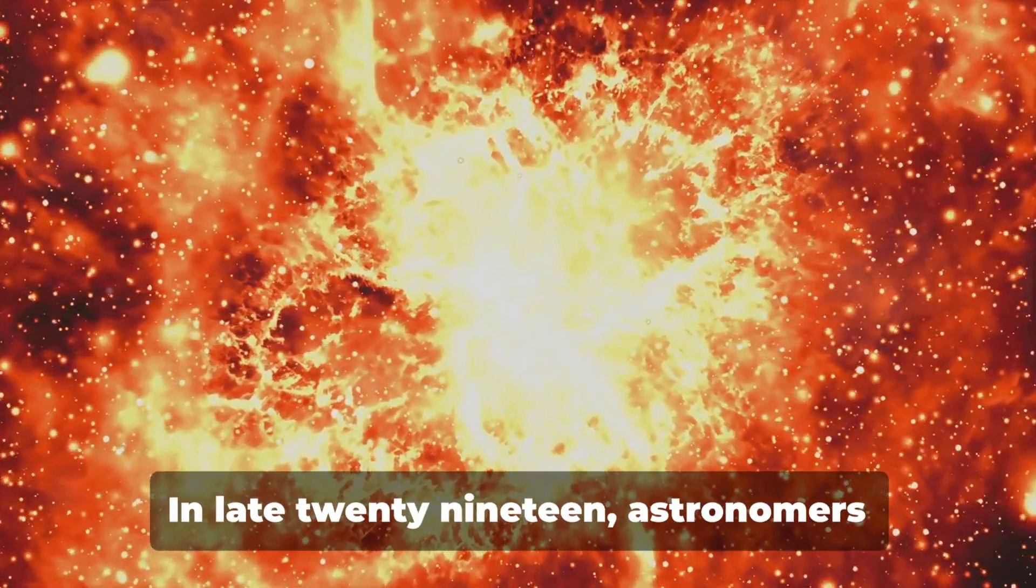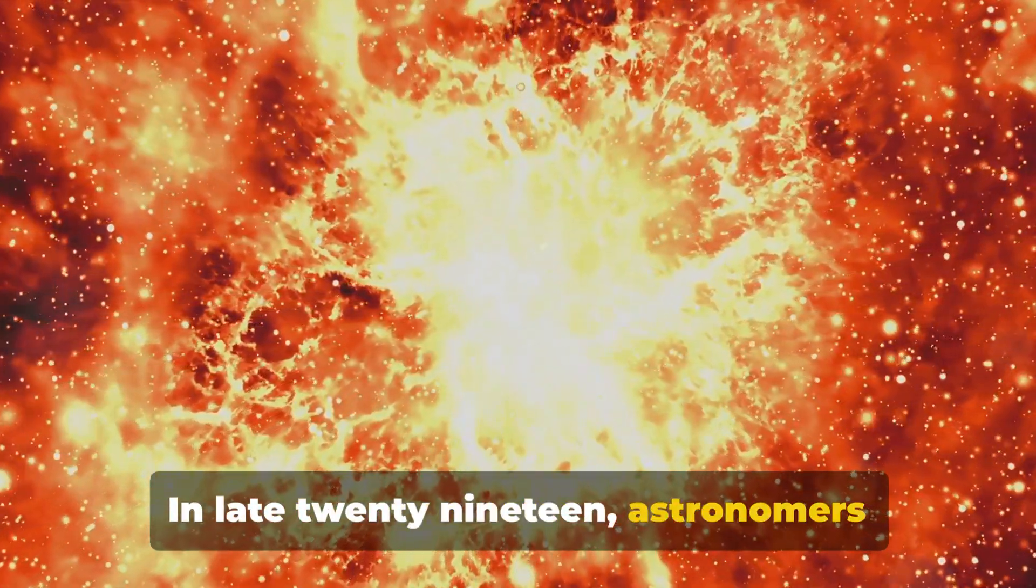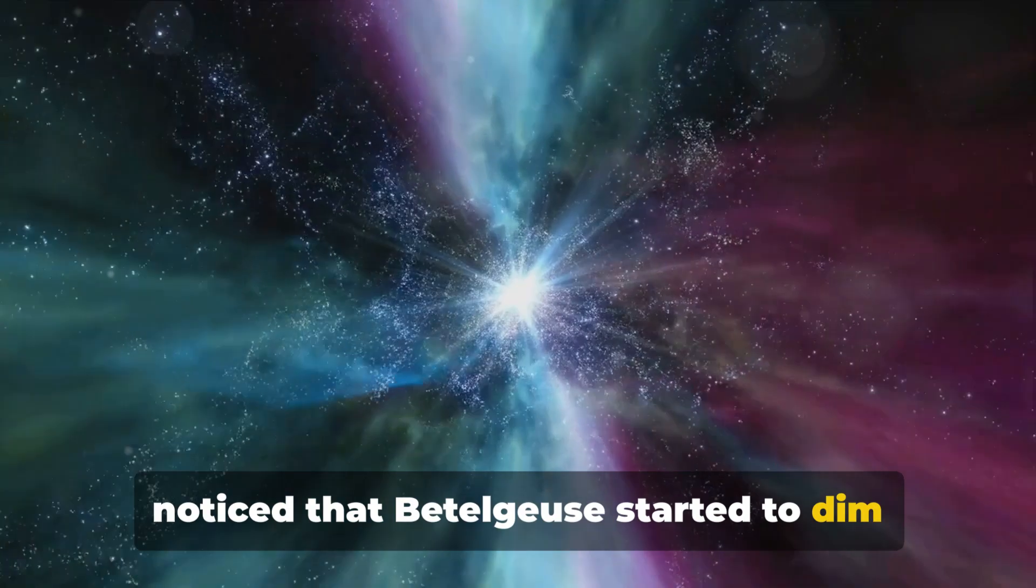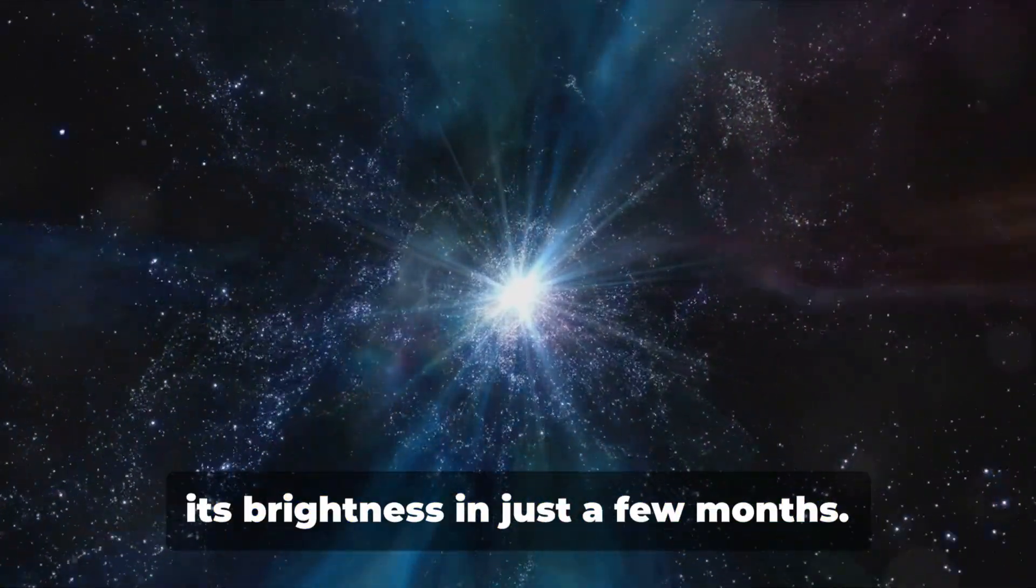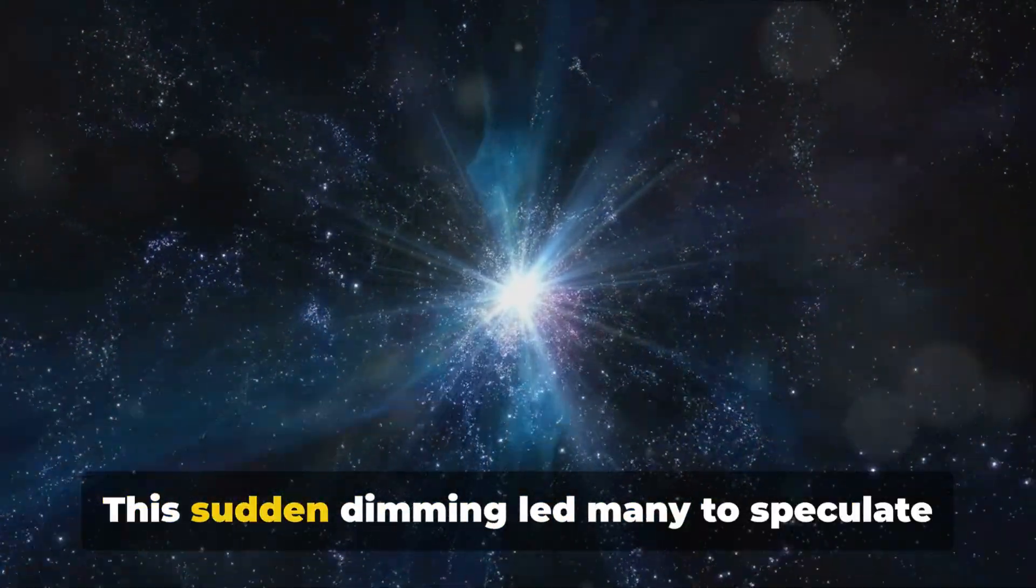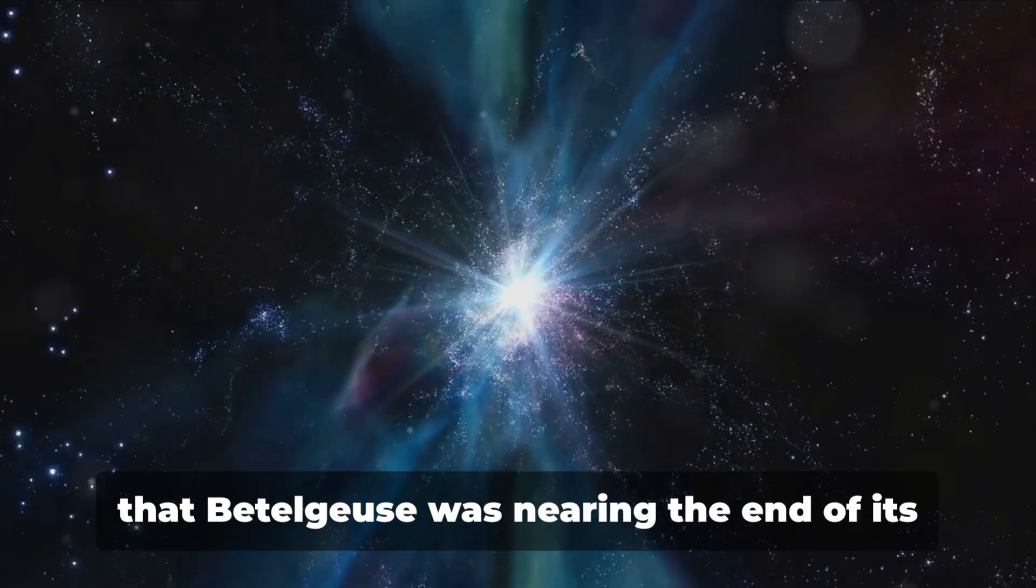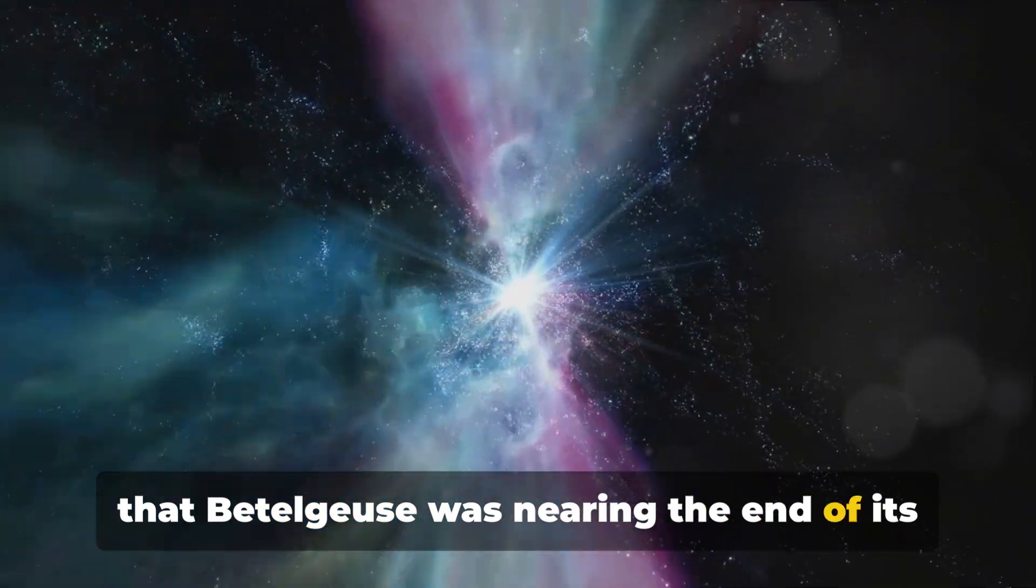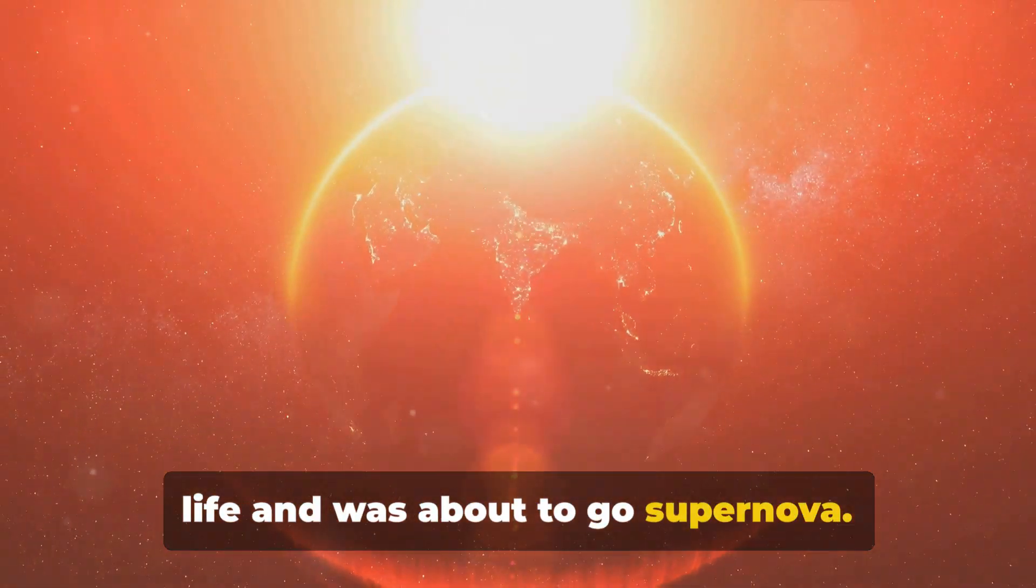Indeed, there is. In late 2019, astronomers noticed that Betelgeuse started to dim dramatically, losing about two-thirds of its brightness in just a few months. This sudden dimming led many to speculate that Betelgeuse was nearing the end of its life and was about to go supernova.